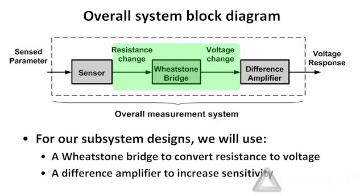In the next stage, we take that resistance change and convert it to a voltage. What we're going to use for that stage is a Wheatstone bridge. One of the primary reasons for using it is that you can modify this bridge circuit to compensate for outside influences — a key challenge in measurement system design is making the output respond only to what you're trying to measure.